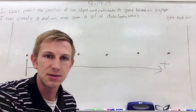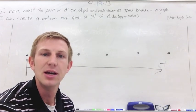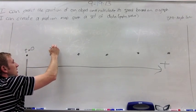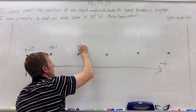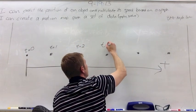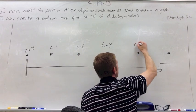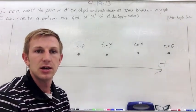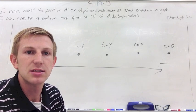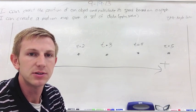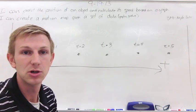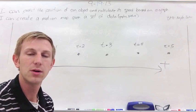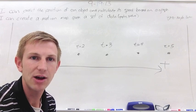Now what those dots actually represent is time. I said I was going to make one every second, so now I'm going to label those: time zero, time one second, time two seconds, time three seconds, time four seconds, and time five seconds. We've got the time part of our motion, and motion also has a distance aspect. So what I'm going to do now is draw arrows that show how far I went in that time.